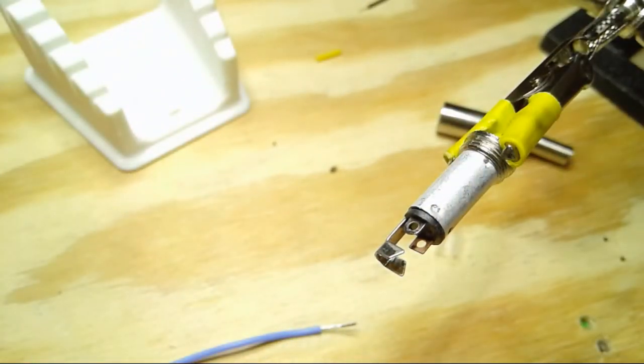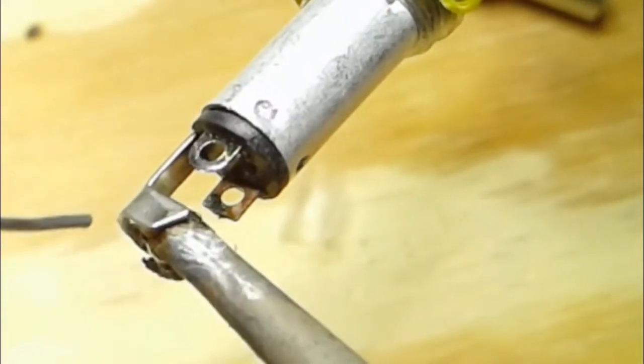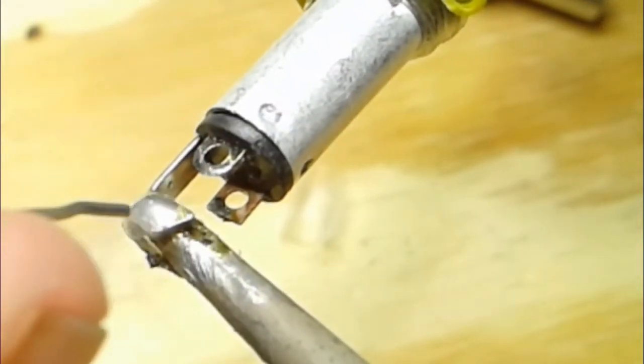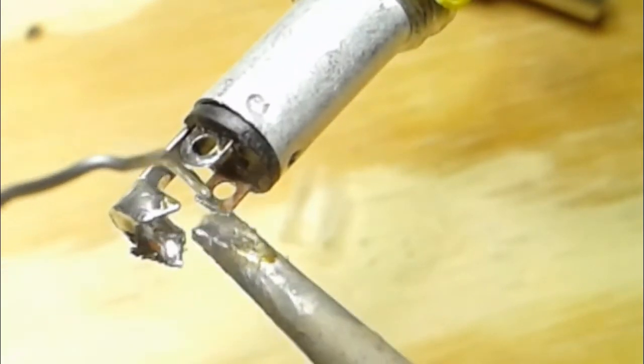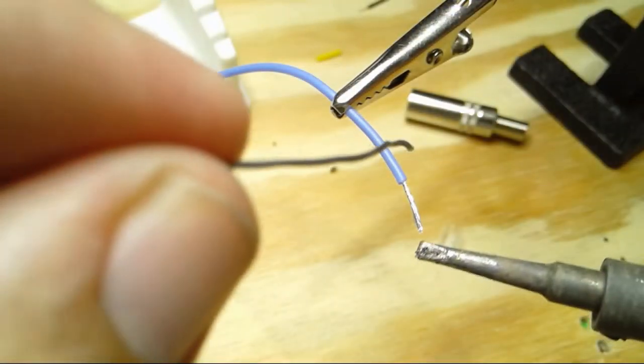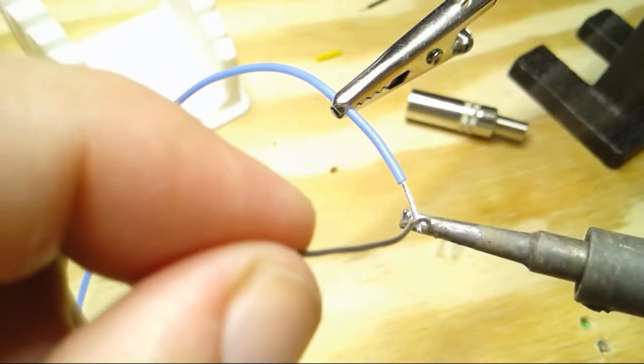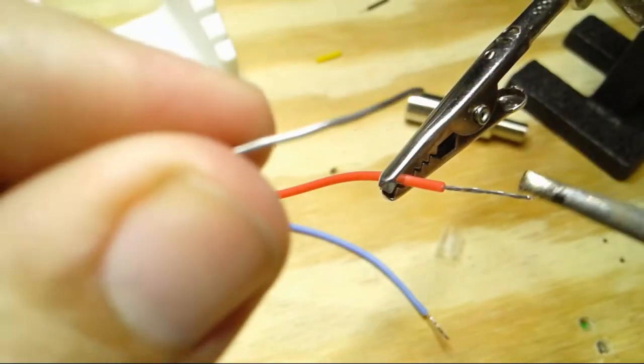We're going to wire this one with stranded wire, which means we're going to tin all of the terminals. I'll just do them all at once here. Now we'll tin the blue wire. Just make sure it's well coated with solder. We'll get the red one as well.